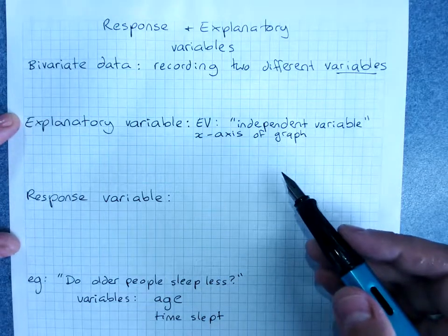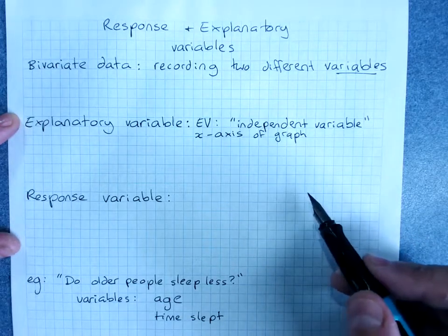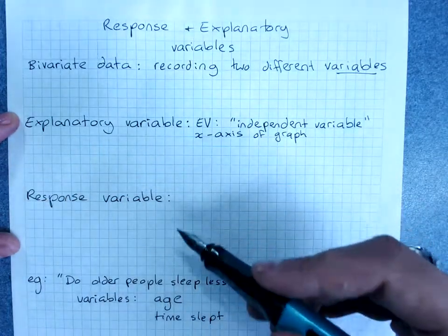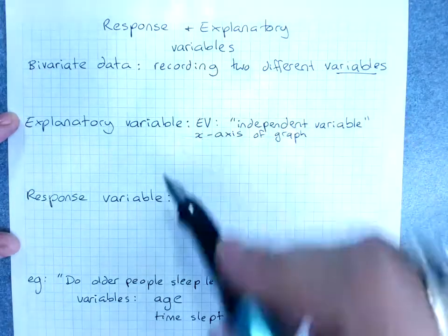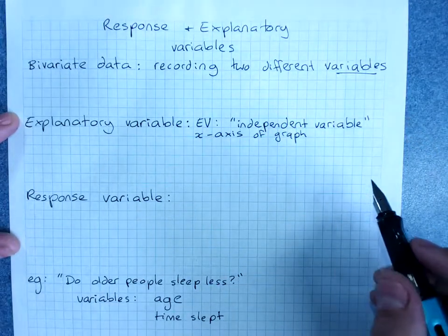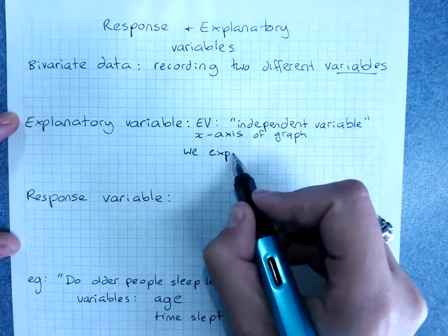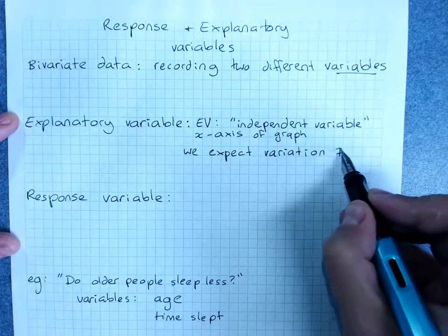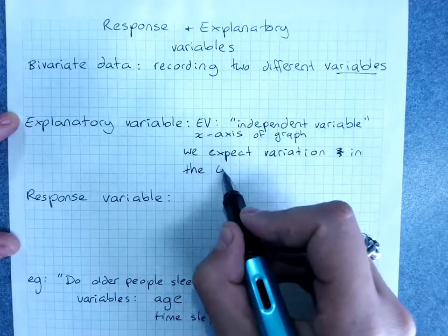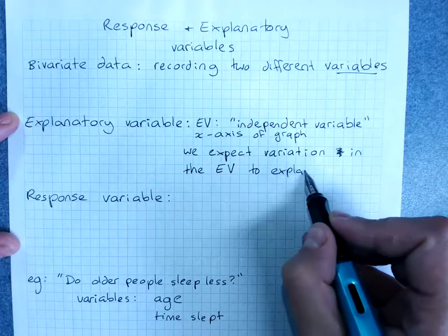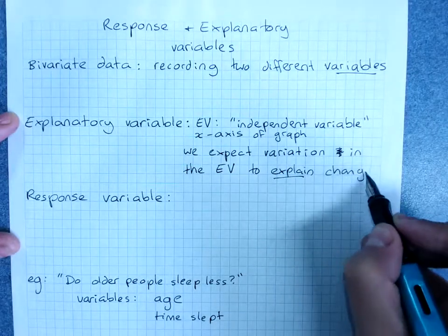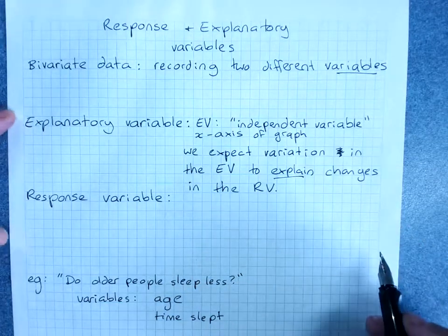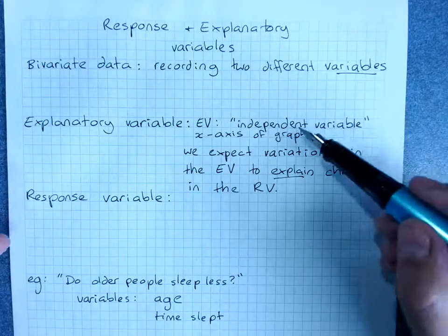So the distance I live from school explains the amount of time it takes me to get to school. Some variation in the response variable can be explained by the variation in the explanatory variable. We expect variation in the explanatory variable to explain changes in the response variable. This is our old independent variable.